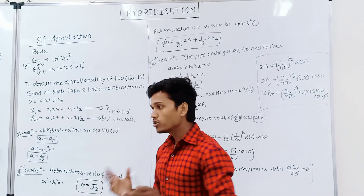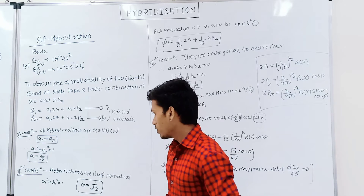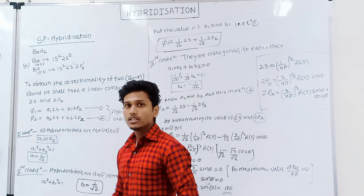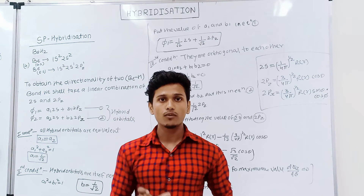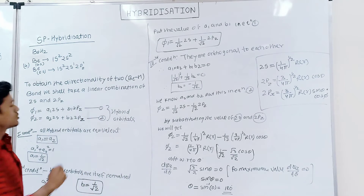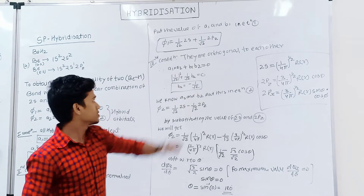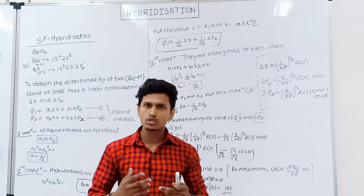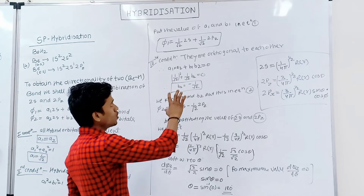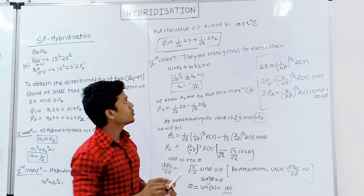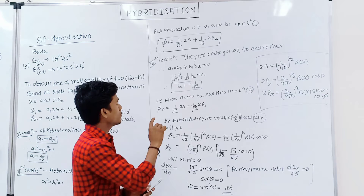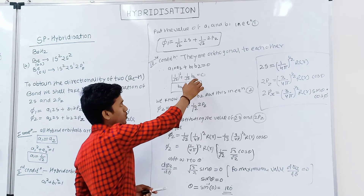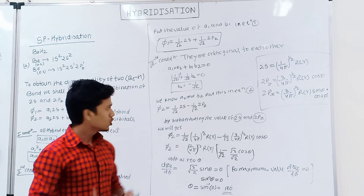The second condition is that both hybrid orbitals are normalized. From here we can also determine the value of b1 because we know the value of a1. Now knowing values a1 and b1, we put these values into equation number 1 to get the resulting equation. The third condition is that both hybrid orbitals are orthogonal to each other. According to this condition, we get a1·a2 plus b1·b2 equal to 0. Since we know the values of a1, b1, and a2, we can find b2, which equals minus 1 by root 2.